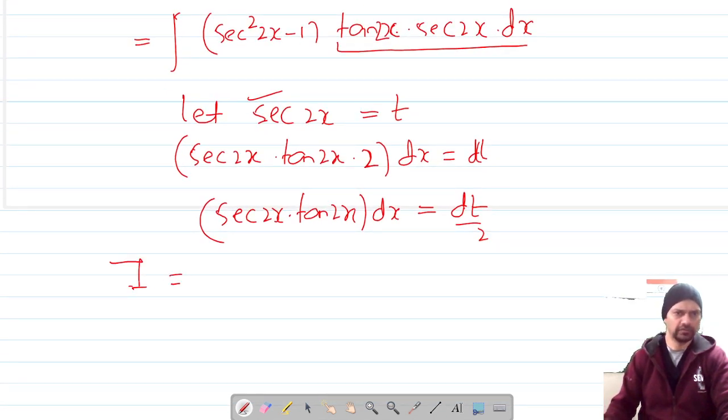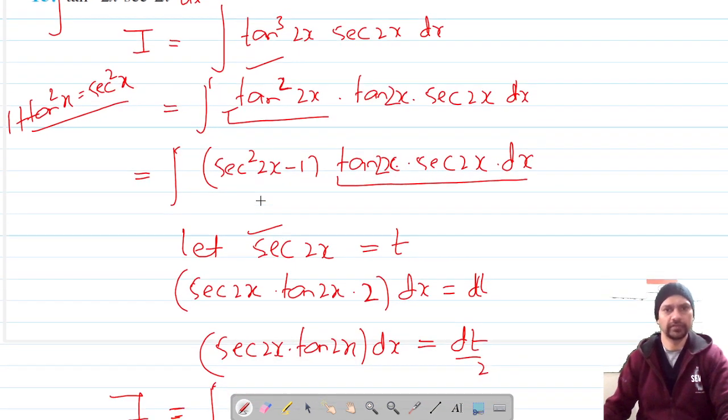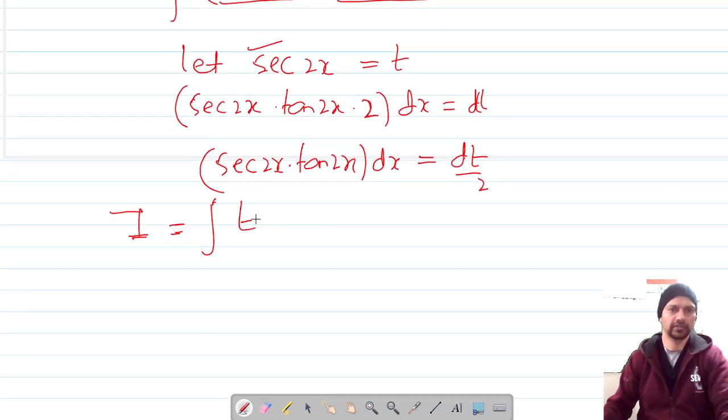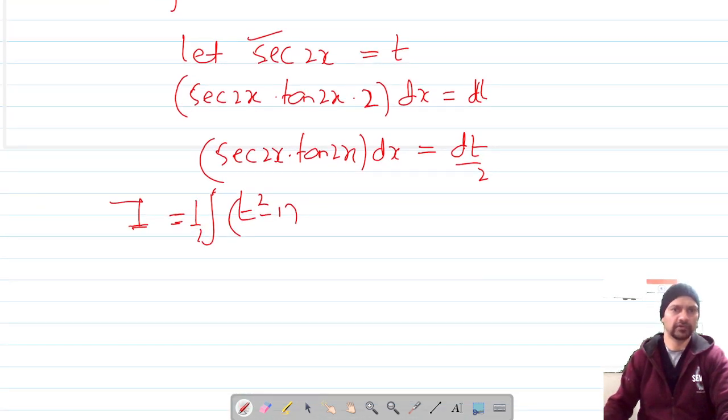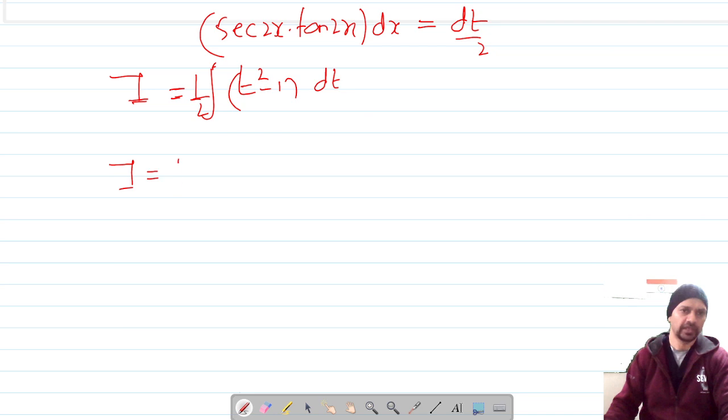Here, this is t² minus 1, this is our dt by 2 so half is out and differential element is dt. And for this our integration of t² is t³ by 3 minus integration of 1 should be t plus c.